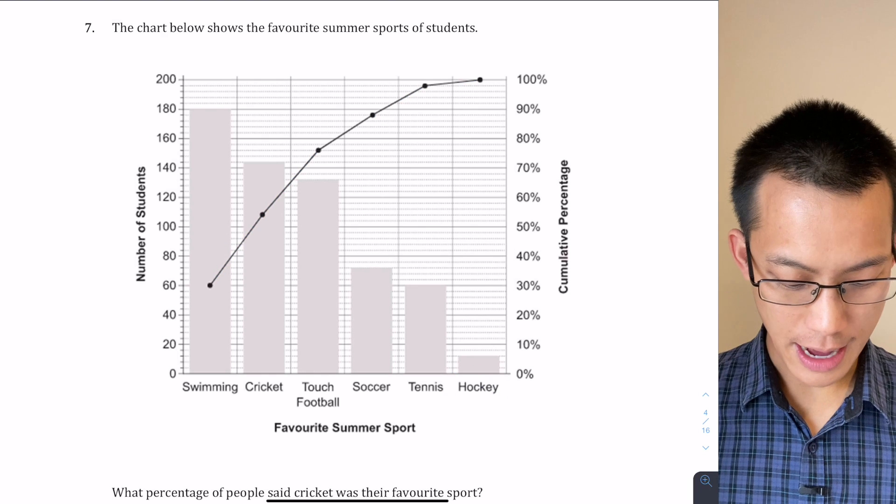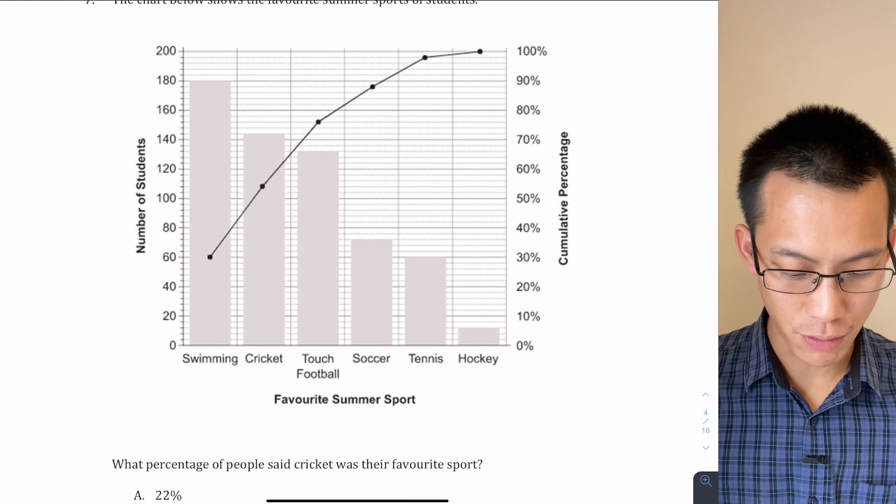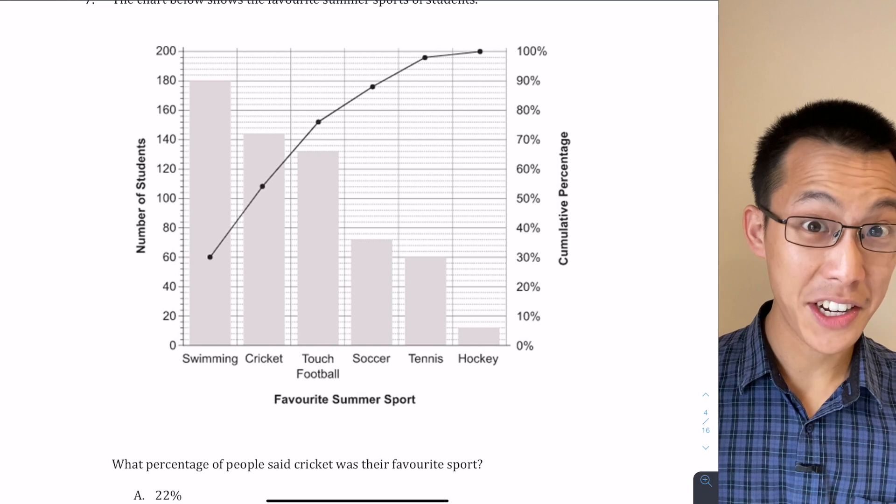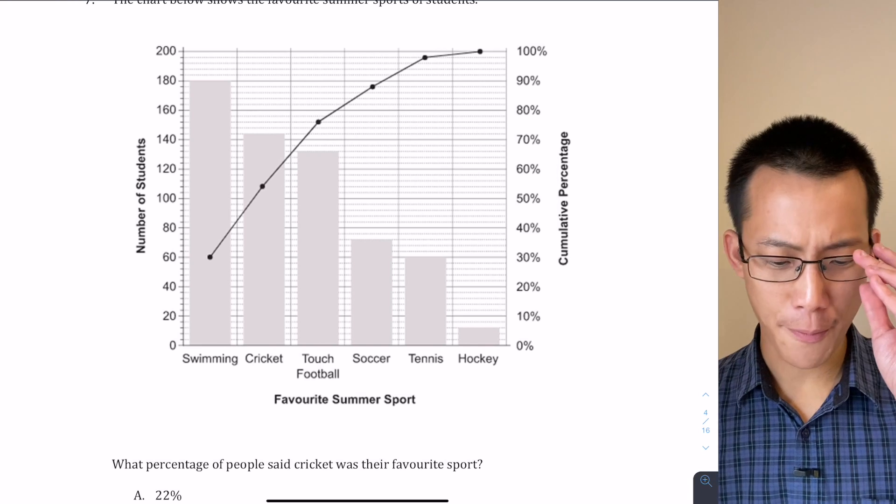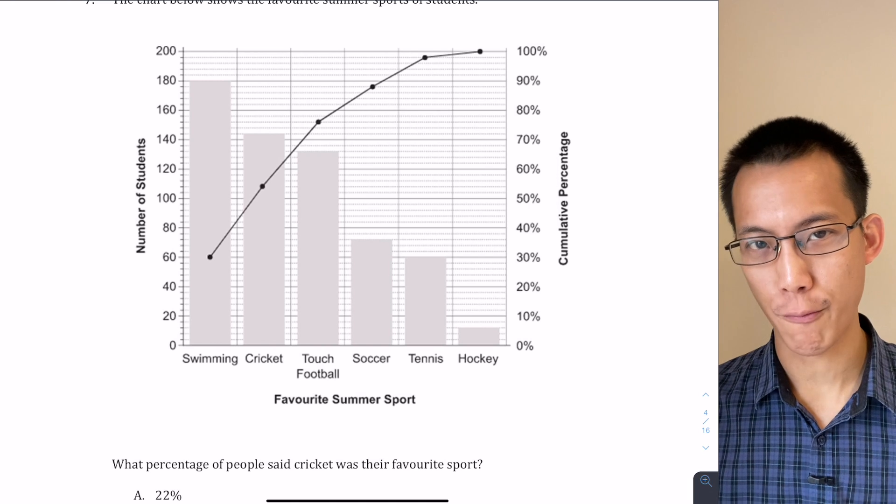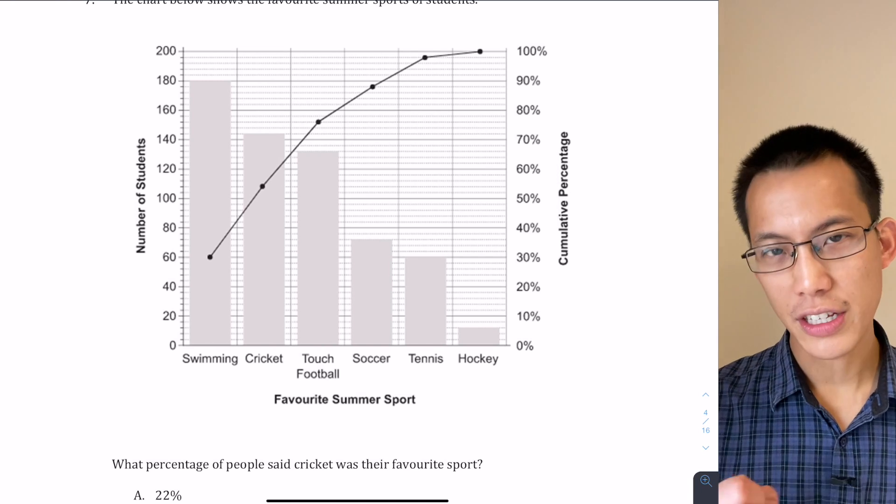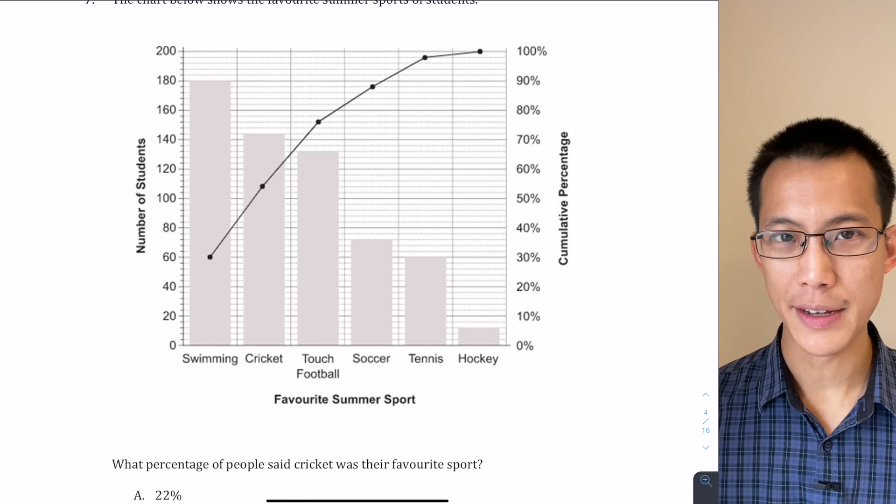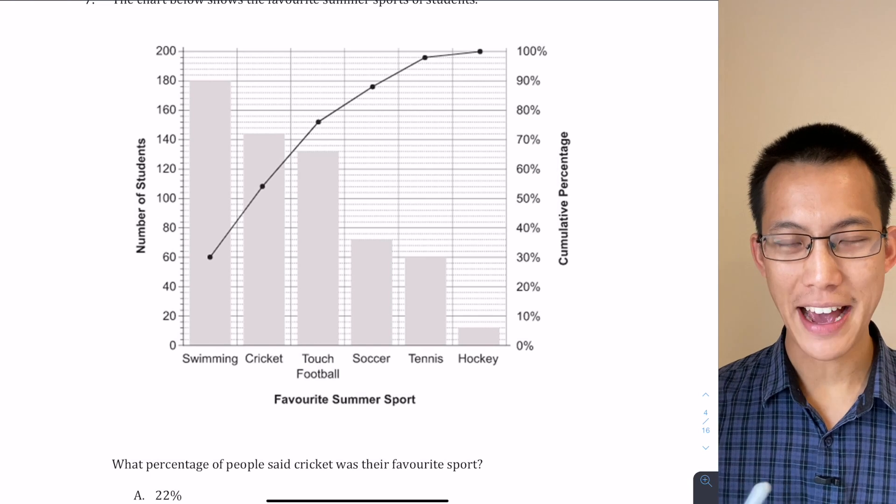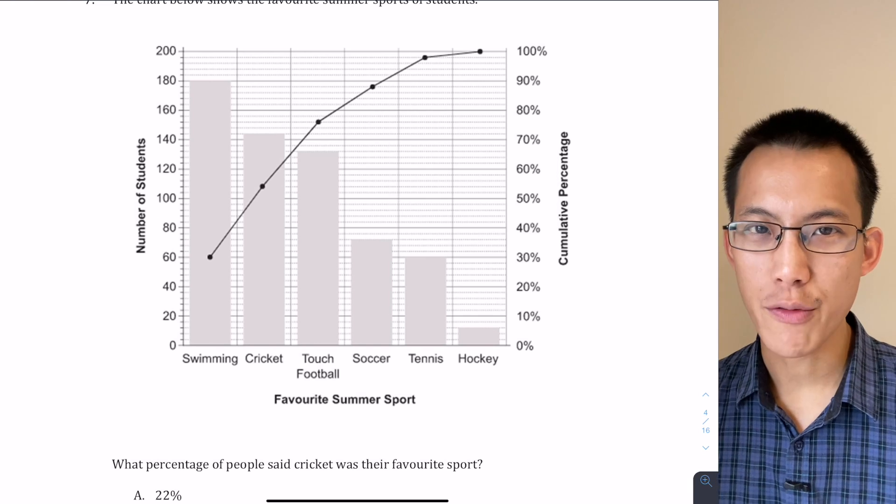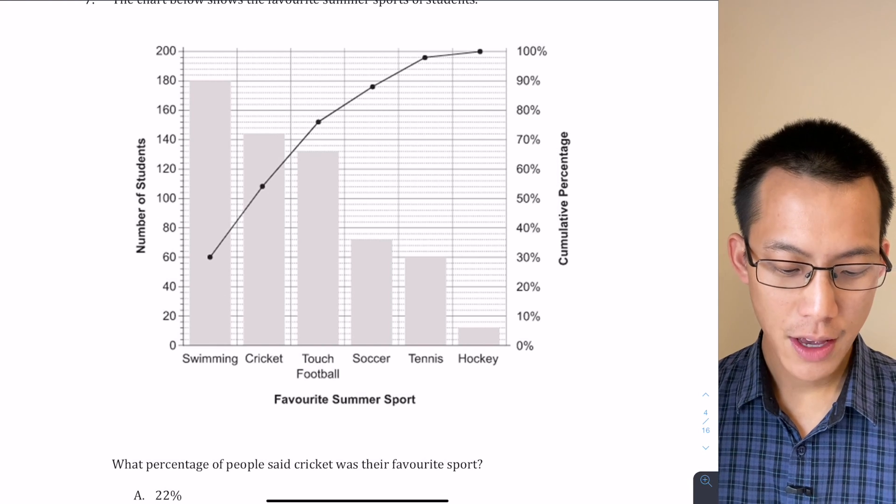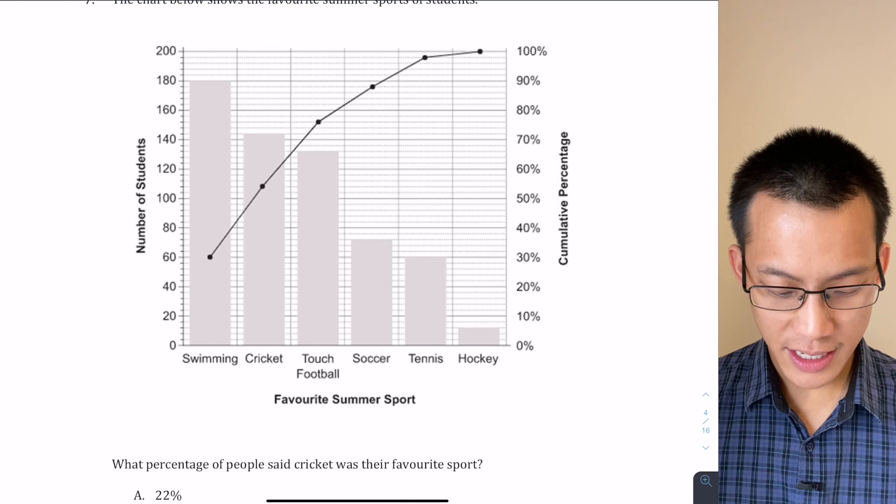So that's the way we read this. How do we use it to interpret this question? It says, what percentage of people said cricket was their favorite sport? So there's a long way and a short way to do this, and this is a trap for people who aren't entirely sure how to read the Pareto chart and interpret it. You can still get the right answer doing it the long way, but it's just going to cost you the time it takes to work out that calculation, and then later on you'll find you run out of time for other questions.